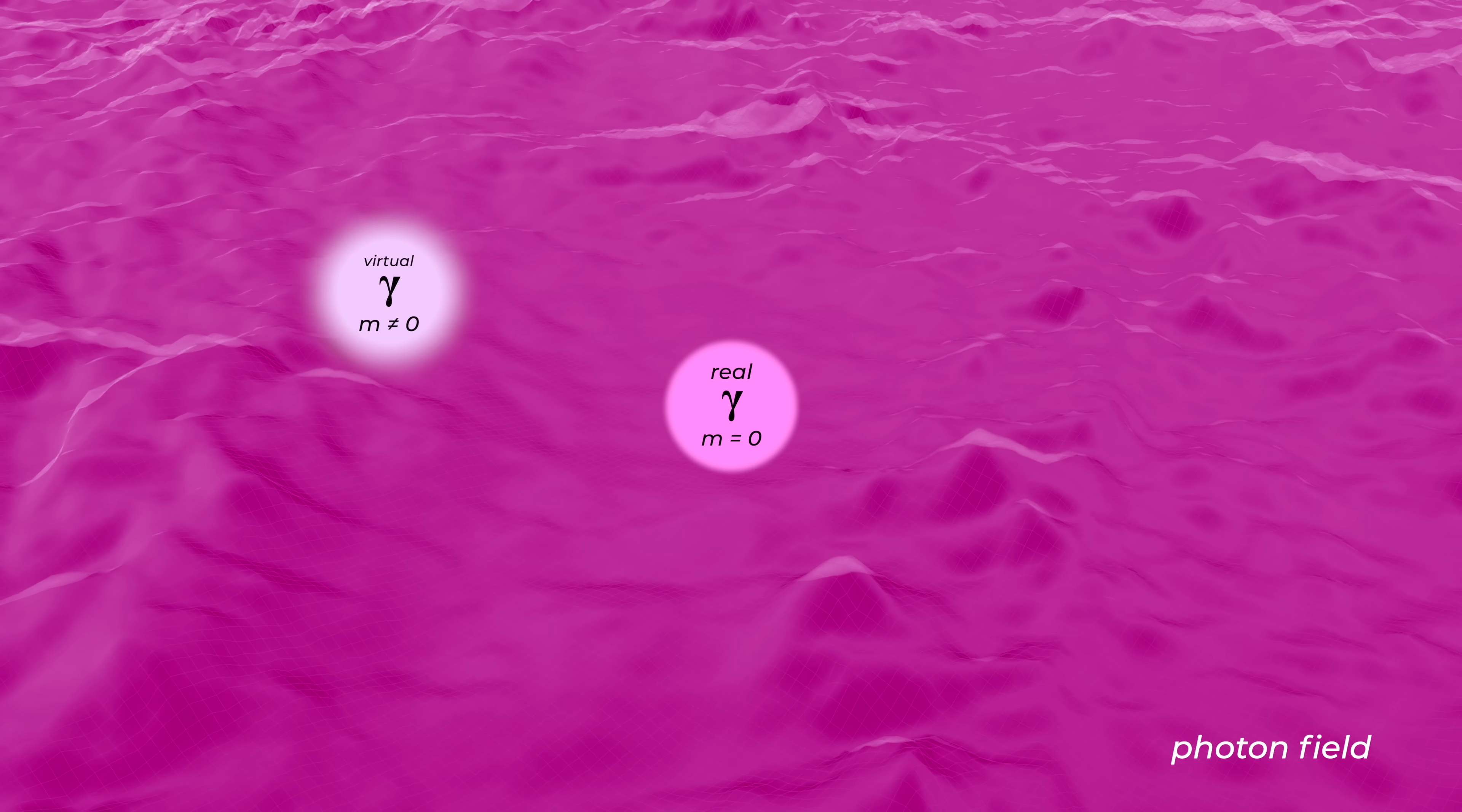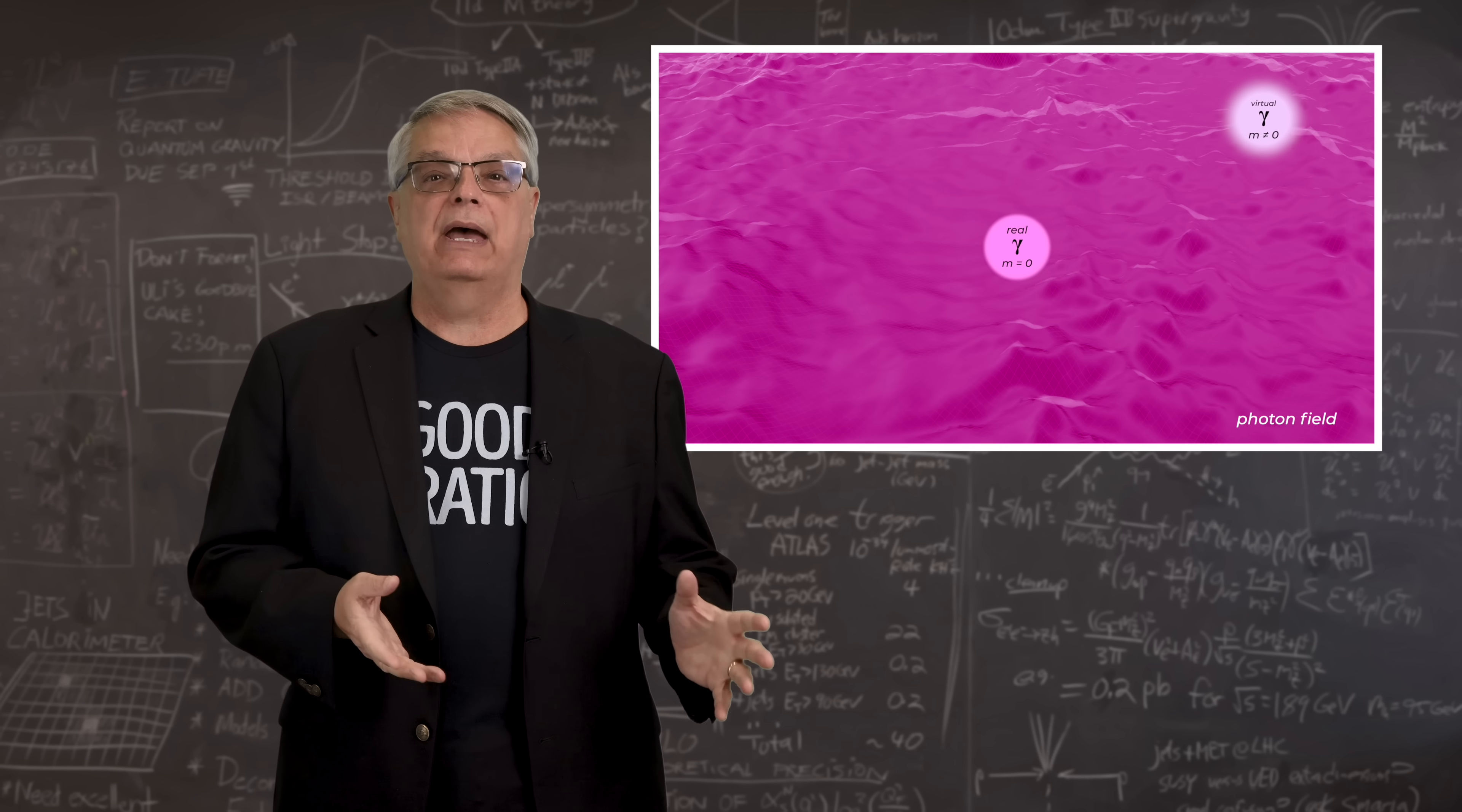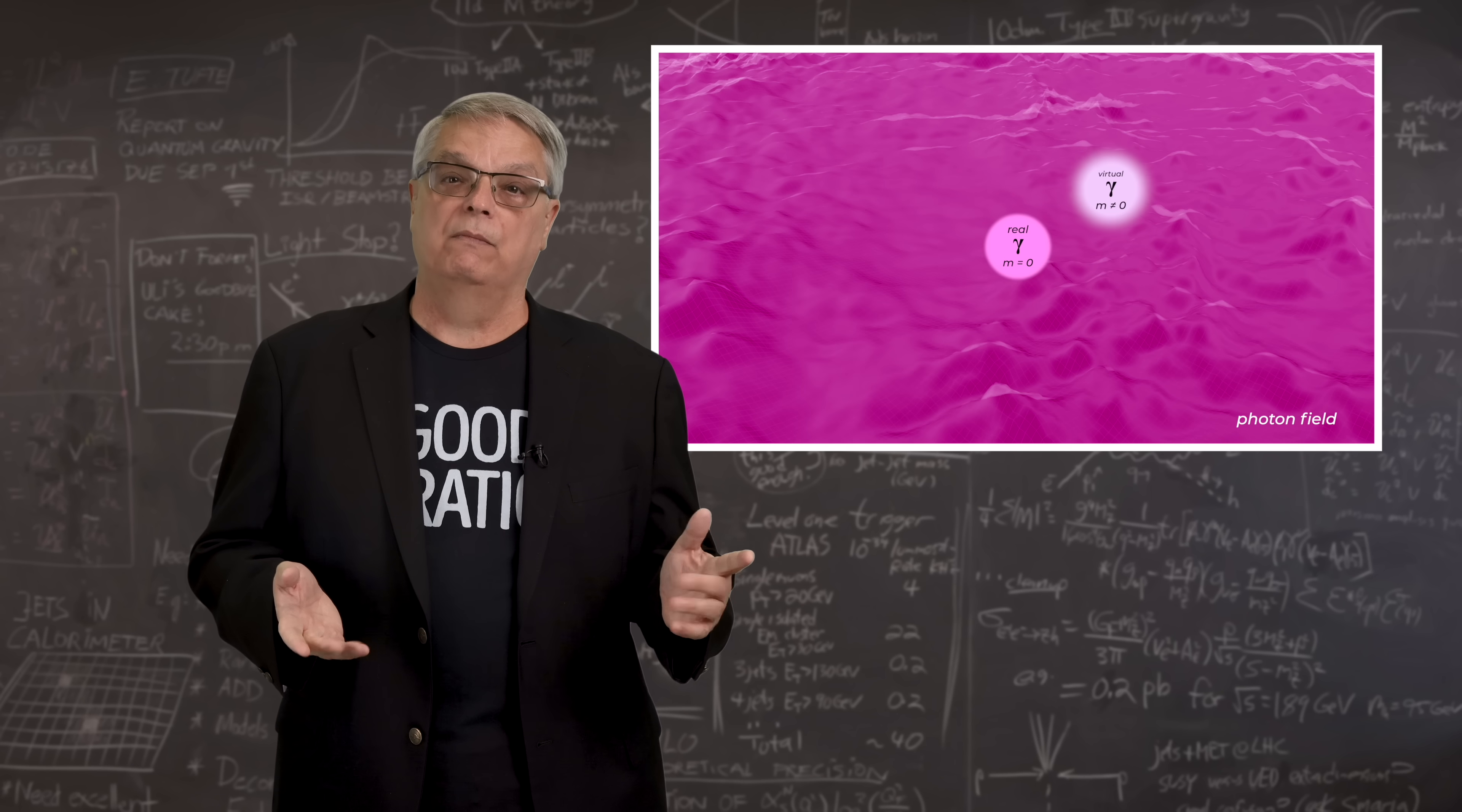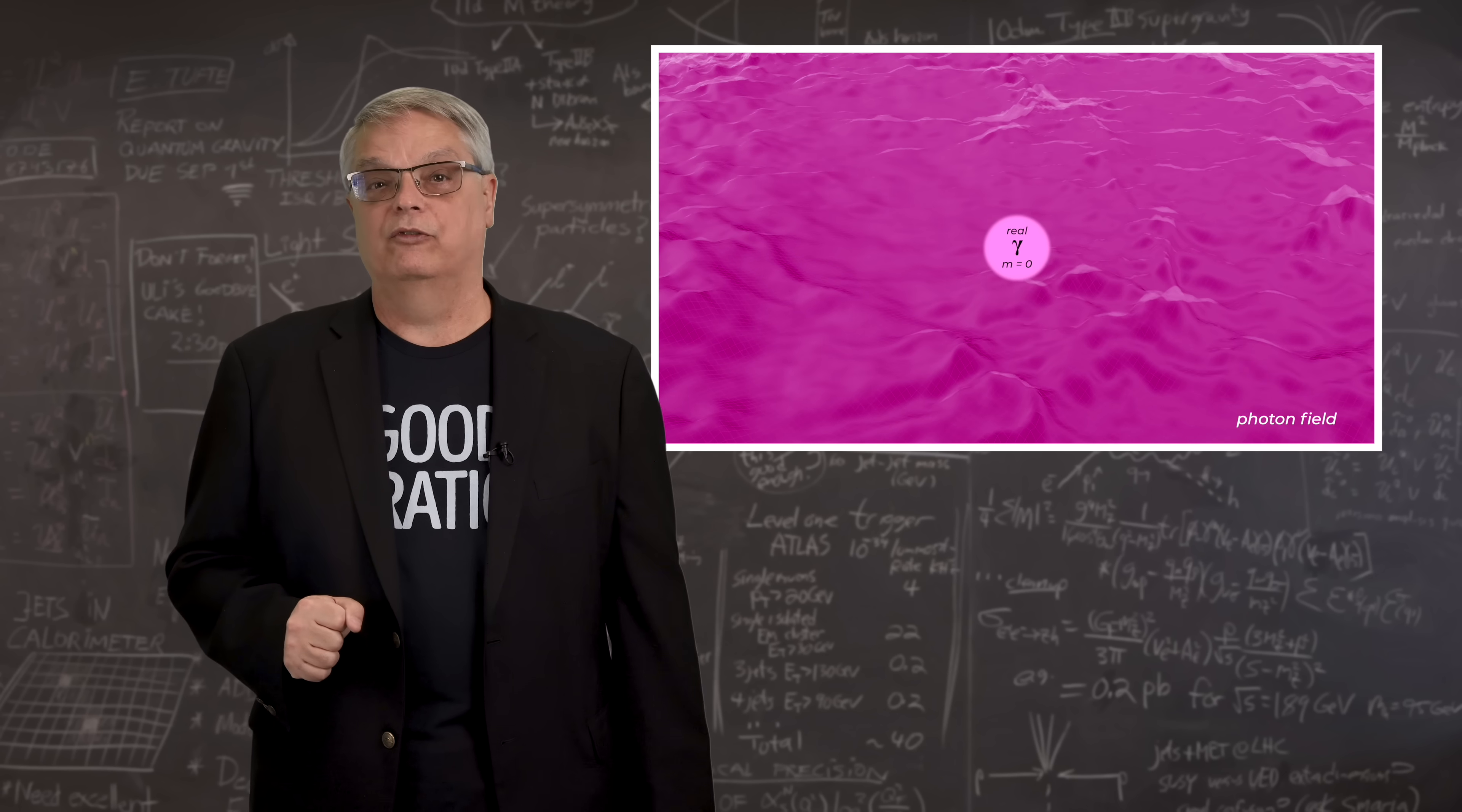The same thing works with the photon field. Vibrations of the photon field make photons. Photons are different than electrons in that they can have any energy, but all real photons have zero mass. So for a real photon, the vibration pattern can have any energy as long as the energy vibration occurs in such a way that it has no mass. If the photon field vibrates in such a way that the vibration doesn't have zero mass, that's a virtual photon.